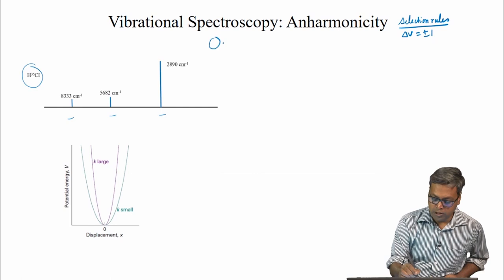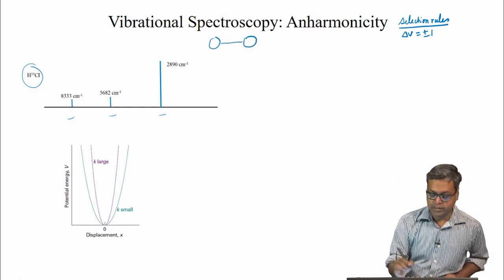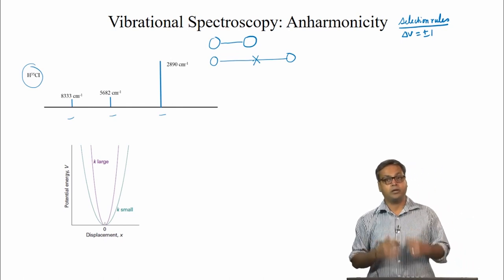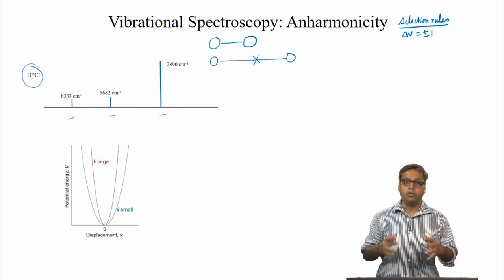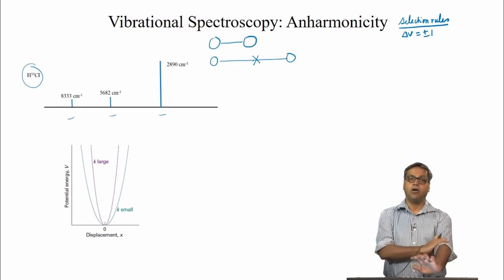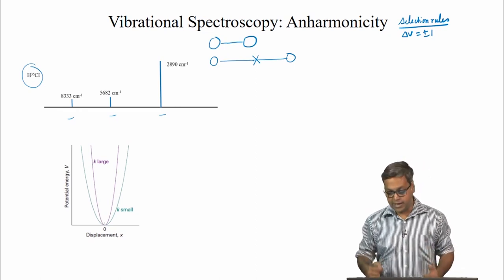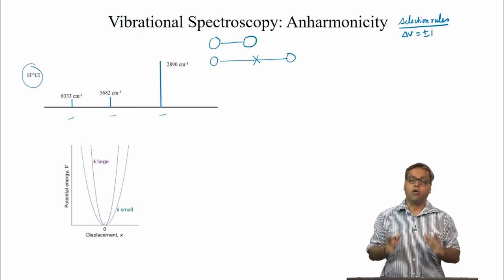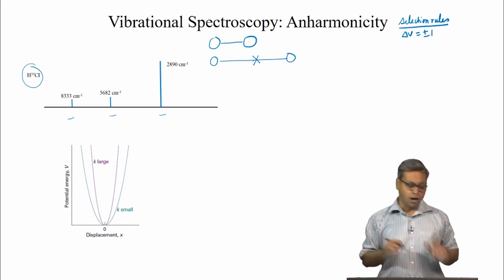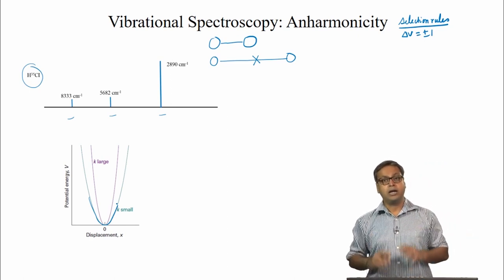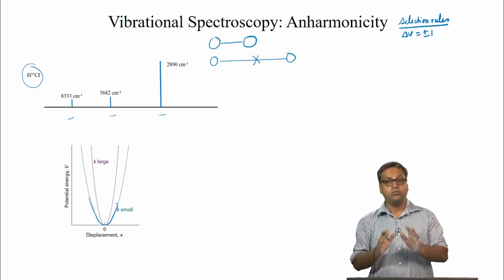If we draw a molecule and this is a bond connecting these two atoms, if we stretch this molecule too much, at some point this bond will break. Or in other words, the molecule should dissociate. This bond breaking is the basis of chemical reactions, or we can say this bond breaking is the basis of chemistry.